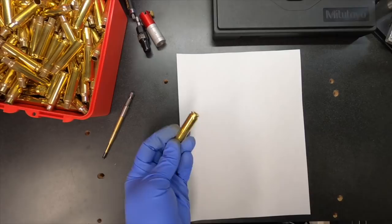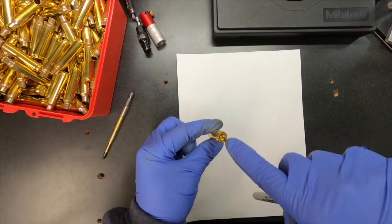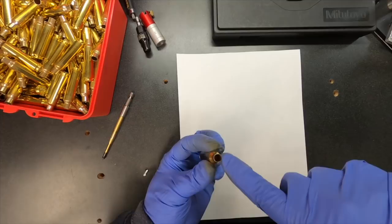Let's talk about primer flash holes. The flash hole is the little hole that basically junctions or connects the flash out of the primer with the powder that is inside your case.